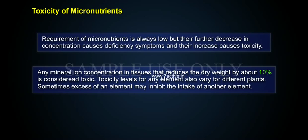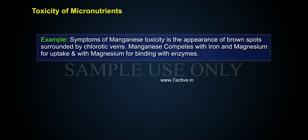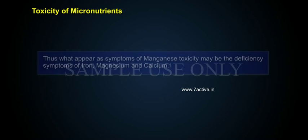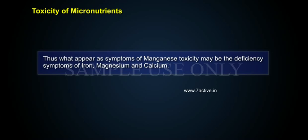Toxicity levels for any element also vary for different plants. Sometimes excess of one element may inhibit the intake of another. For example, symptoms of manganese toxicity appear as brown spots surrounded by chlorotic veins. Manganese competes with iron and magnesium for uptake, and with magnesium for binding with enzymes. Manganese also inhibits calcium translocation in the shoot apex.